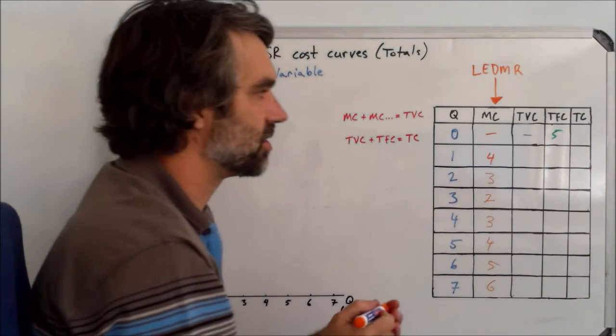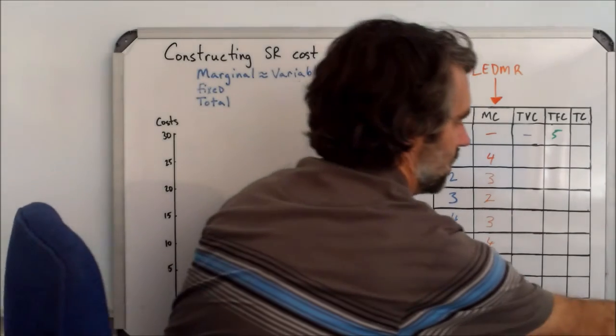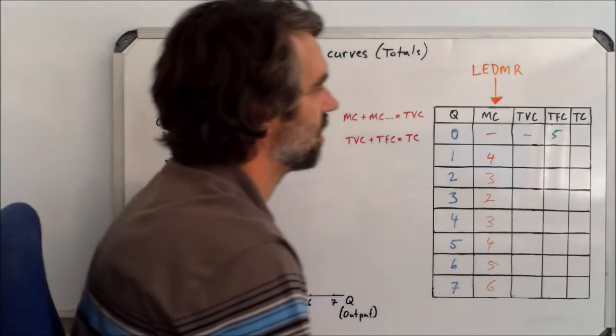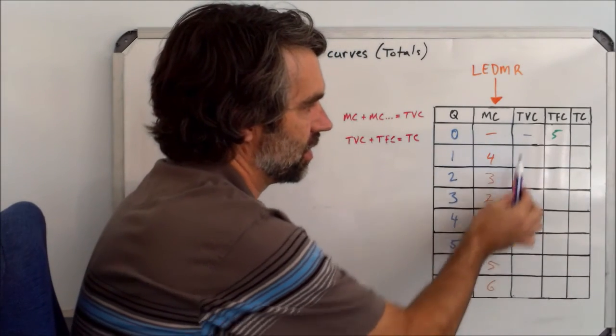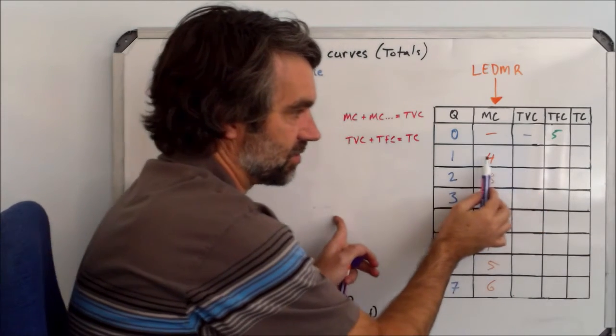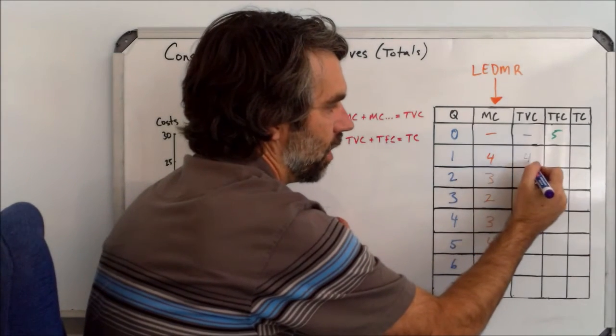Well, from there, we can start to derive the rest of this information. The total variable costs are simply the marginal costs added together. So here, the total variable cost is just four plus nothing, so four.